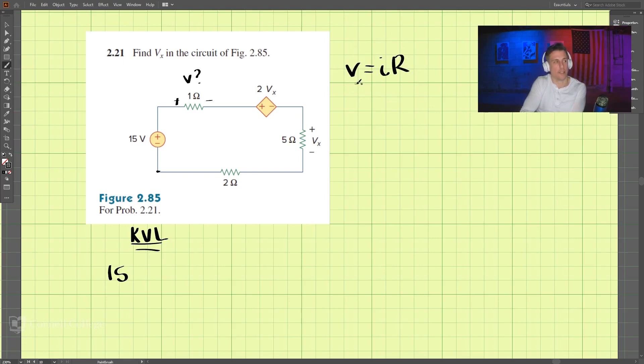So if we call this I, the current coming out of here, we know that the voltage across here is I times R, which is 1.